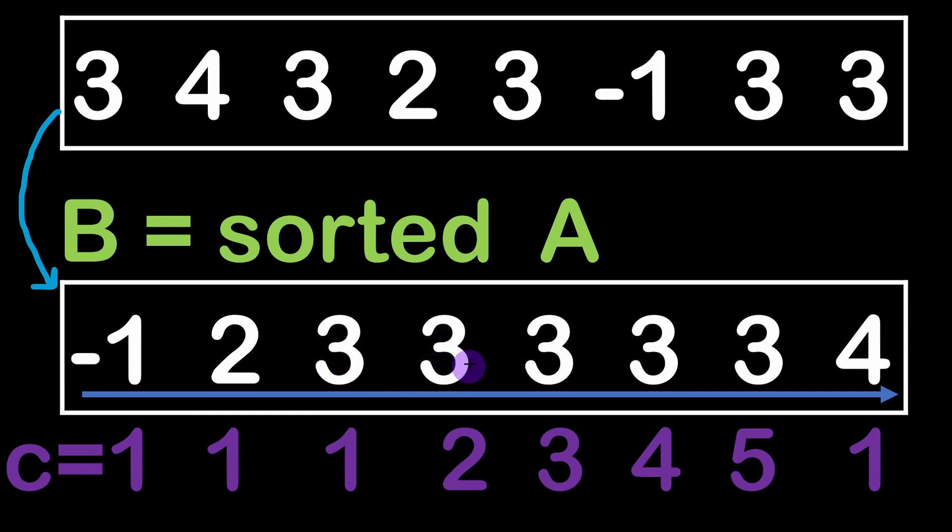But then we have this element here that is equal to its previous neighbor, in which case we are going to increment the counter C by one. So C will be equal to two at this stage. Then number three occurs one more time, so this is the third occurrence. We keep incrementing C until we have another difference between two neighbors and we reinitialize C to one.